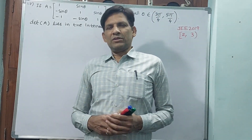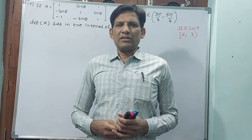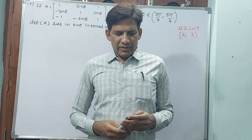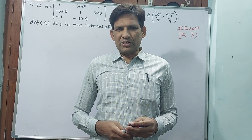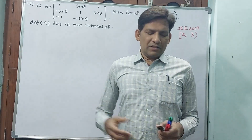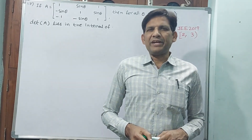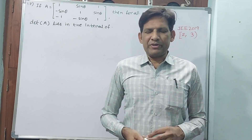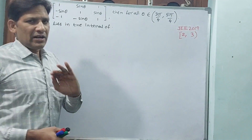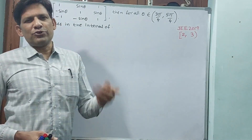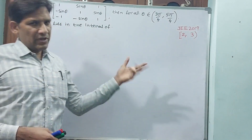Dear students, we are in JEE Mathematics in the chapter of Determinants. Until now we have completed 16 questions, 16 videos, or 16 classes. Today we are going to complete four questions: 17, 18, 19, and 20 — Determinants only. We have marked up to 2019 only, we are doing every model.